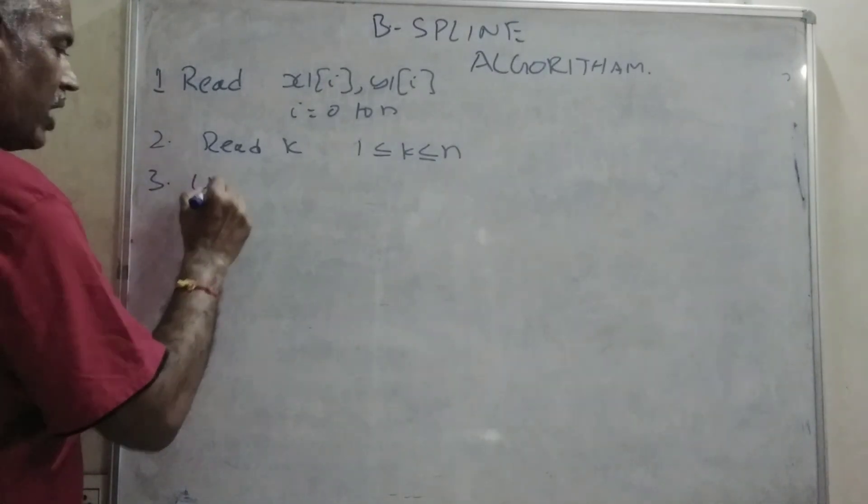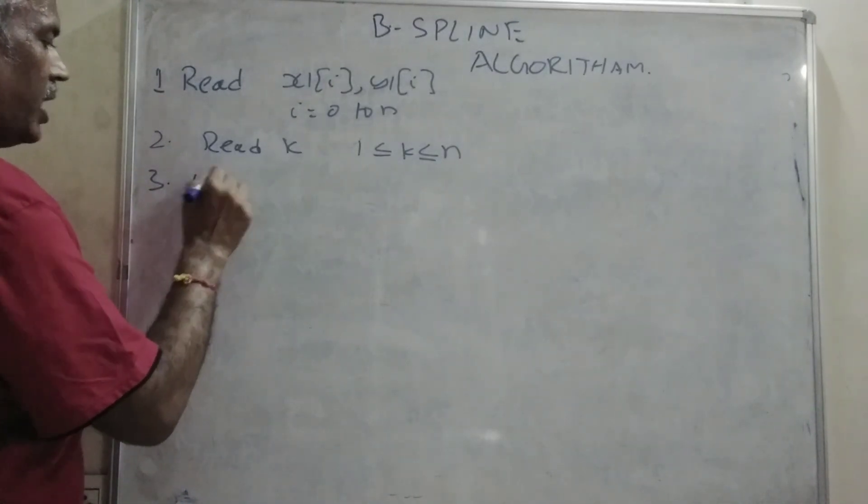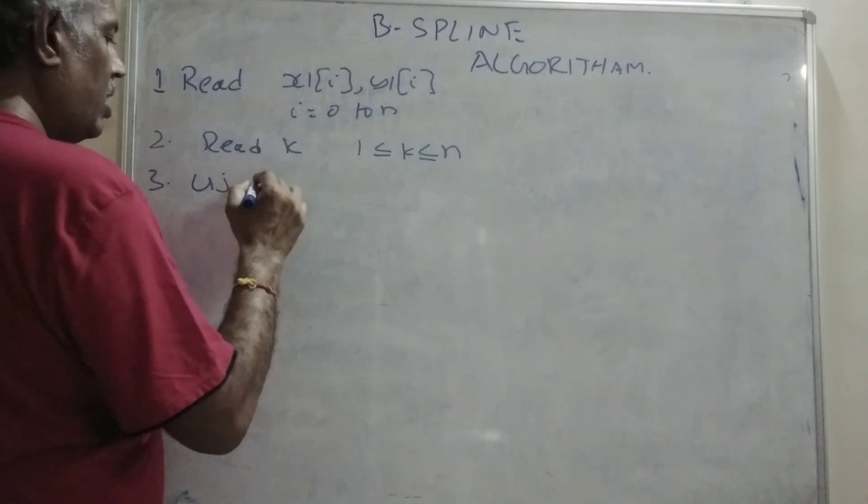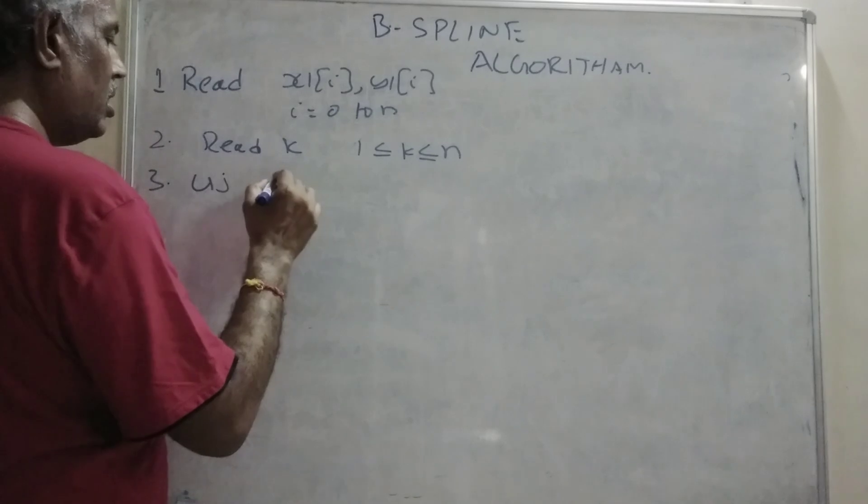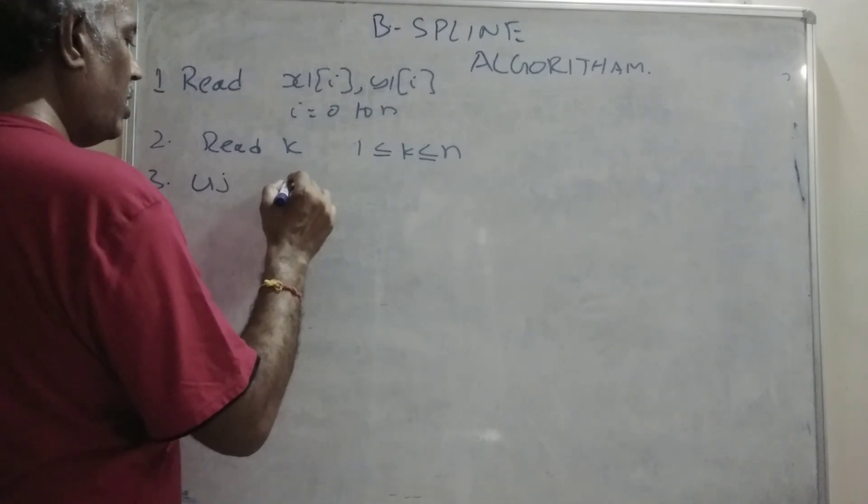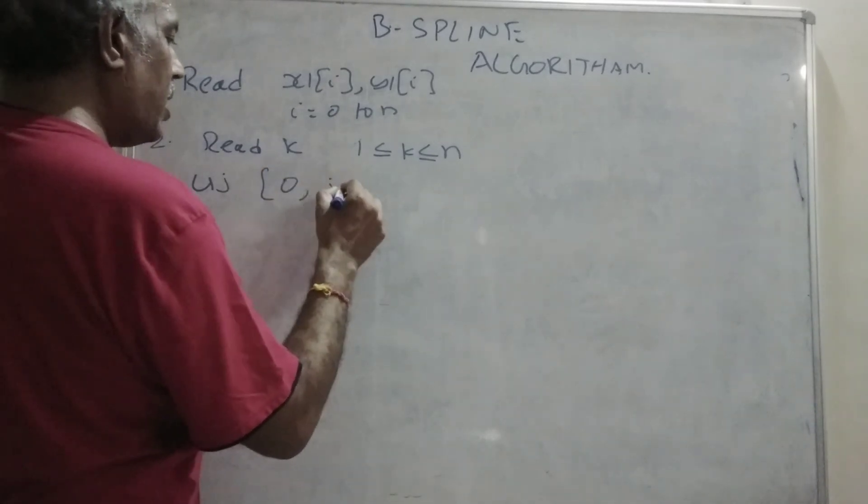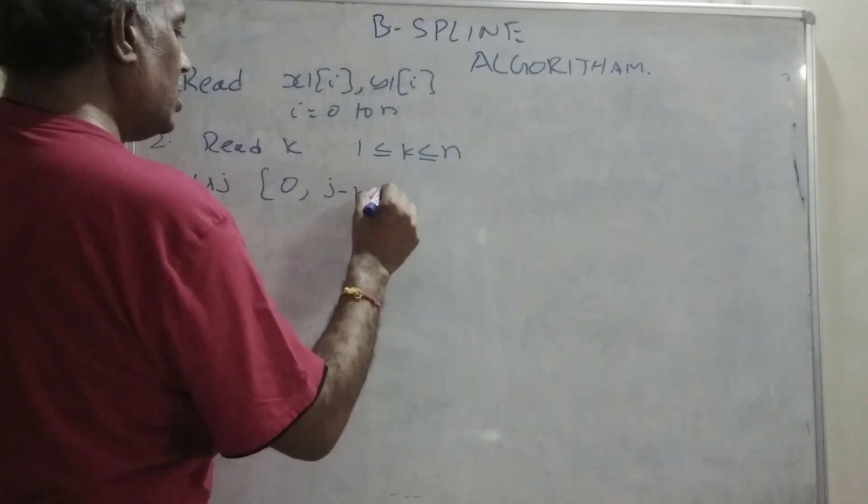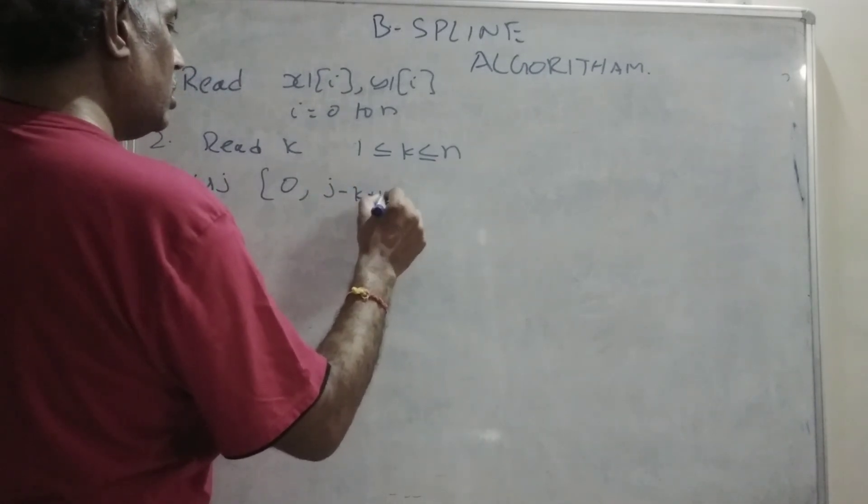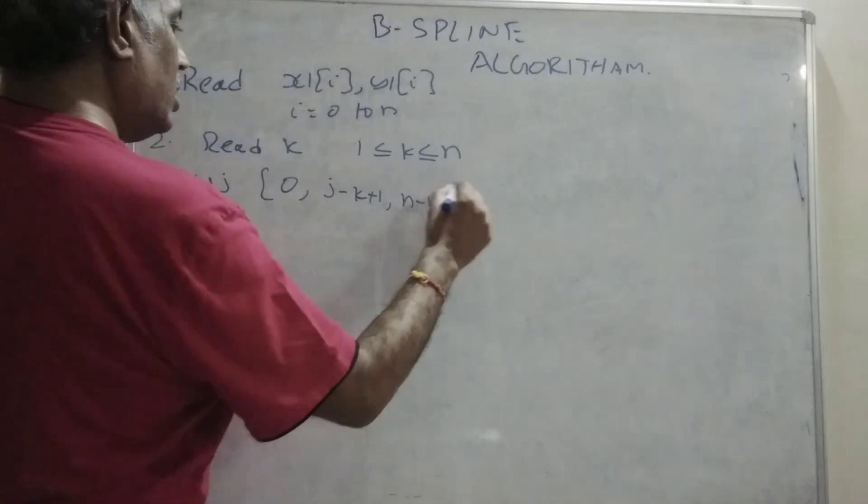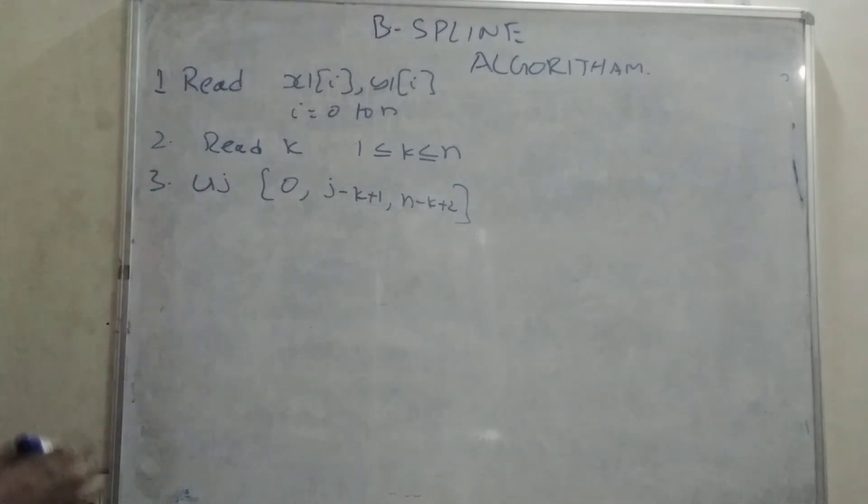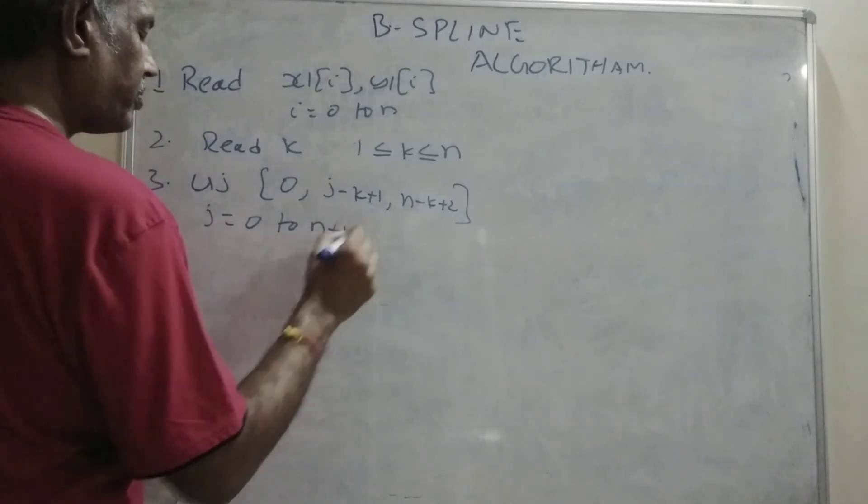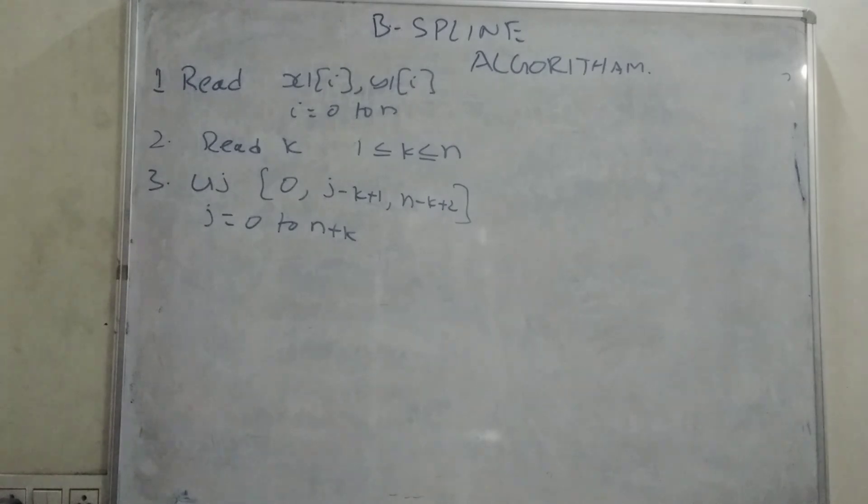The third, you have to find out a value of uj. This uj will be having a value of 0, j minus k plus 1, n minus k plus 2. So out of these values will be varying from 0 to n plus k.